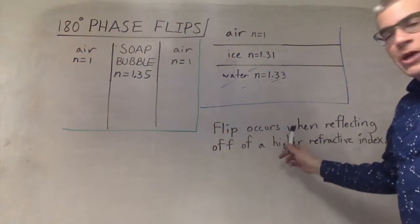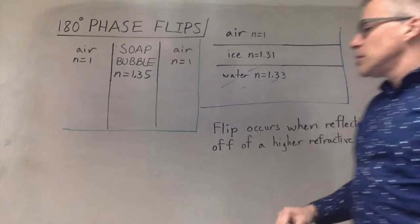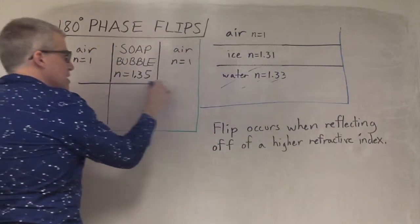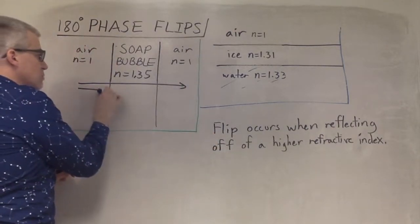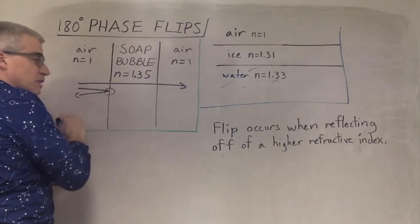Now phase flips happen when you are reflecting off of a higher index of refraction, but not when you flip off lower. So a beam can go straight through, it can reflect here, and here we're bouncing off of 1.35 higher than 1. We get a flip.